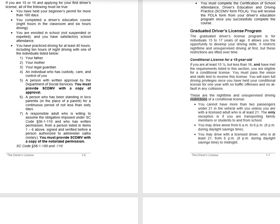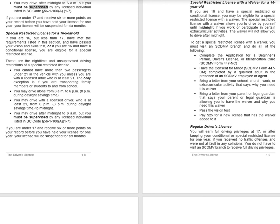Nighttime and unsupervised driving restrictions of a Conditional License: You cannot have more than two passengers under 21 in the vehicle with you unless you are with a licensed adult who is at least 21. The only exception is if you are transporting family members or students to and from school. You may drive alone from 6 a.m. to 6 p.m. (8 p.m. during Daylight Savings Time). You may drive with a licensed driver who is at least 21 from 6 p.m. (8 p.m. during Daylight Savings Time) to Midnight. You may drive after midnight to 6 a.m., but you must be supervised by any licensed individual listed in SC Code, Section 56-1-100(A)(1-7). If you are under 17 and receive 6 or more points on your record before you have held your license for one year, your license will be suspended for 6 months.